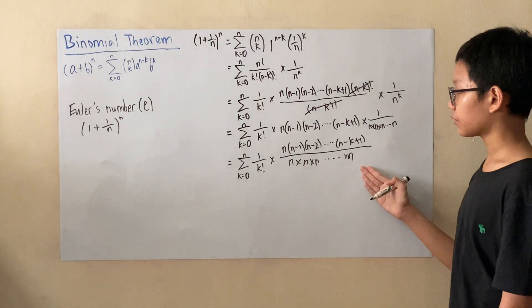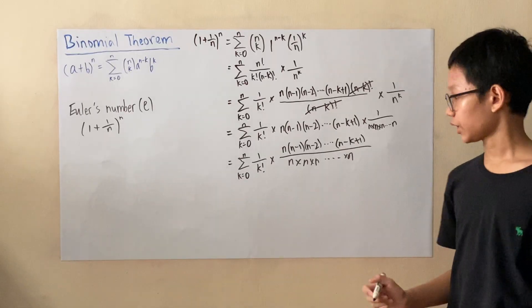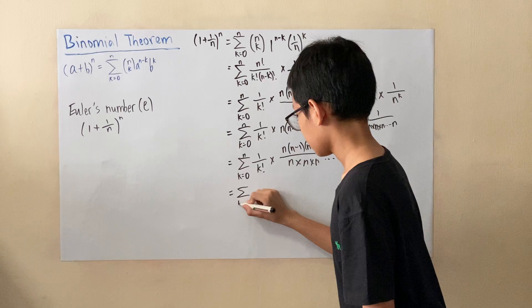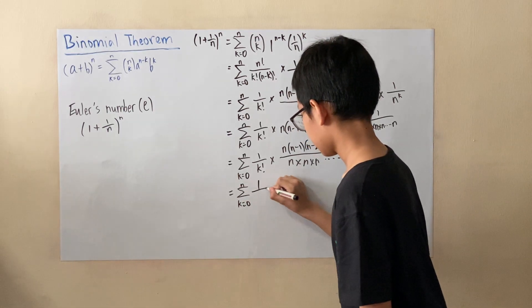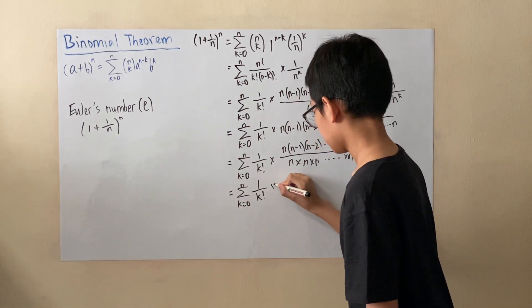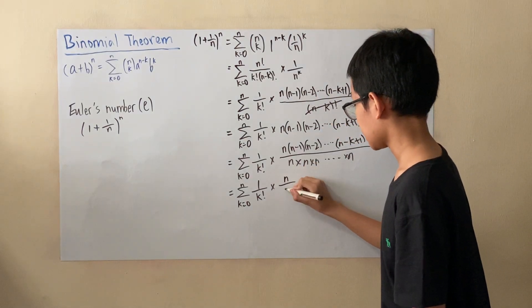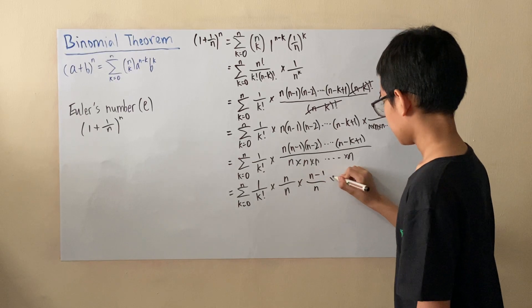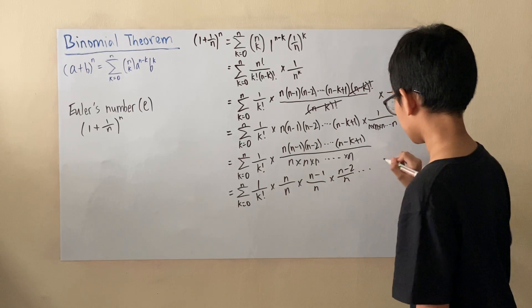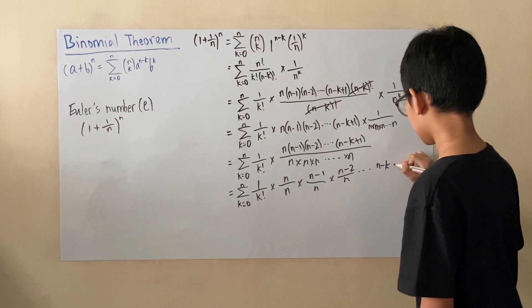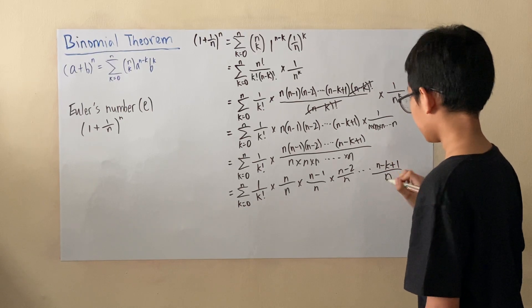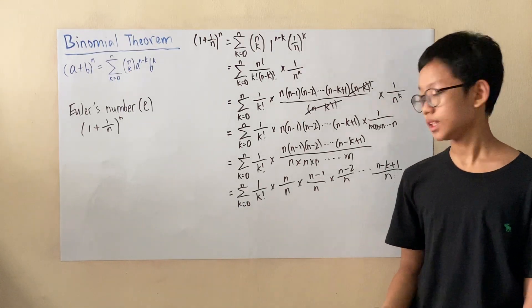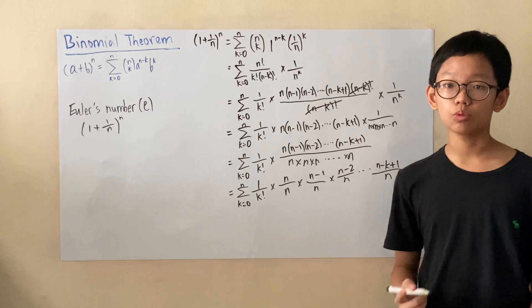So now that we have this big fraction, I would like to split it up into many, many smaller fractions. So what we'll get is n/n times (n-1)/n times (n-2)/n and so on until (n-k+1)/n. But what's interesting here is that as n gets closer to infinity, these numbers get very, very close to 1.